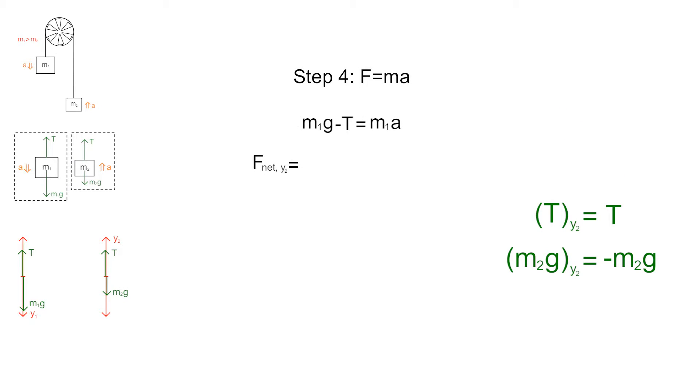Our net force along the Y2 axis acting on M2 is T minus M2g, which is equal to M2a.